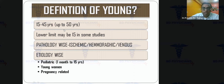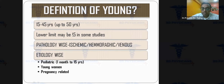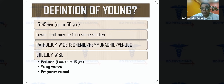The definition of young stroke is not formally established, but most literature defines it as ages 15 to 45 years, sometimes up to 50. Below 15 years is considered the pediatric age group. Young stroke can be ischemic, hemorrhagic, or venous. Special subgroups include pediatric patients, young women, and those in pregnancy — where strokes of different types and etiologies can occur in the postpartum and intrapartum periods.